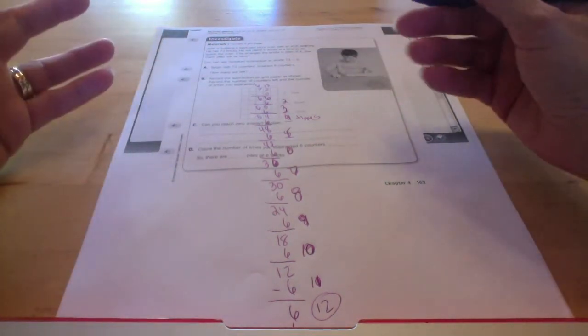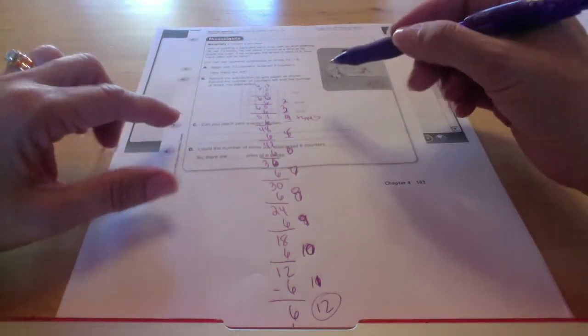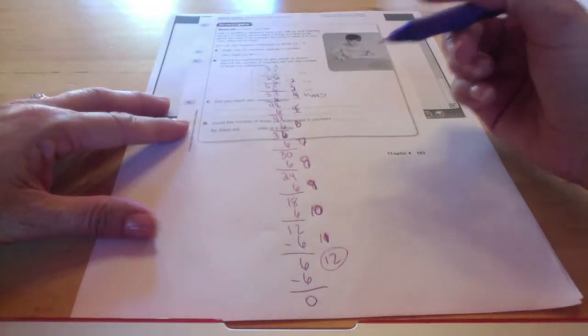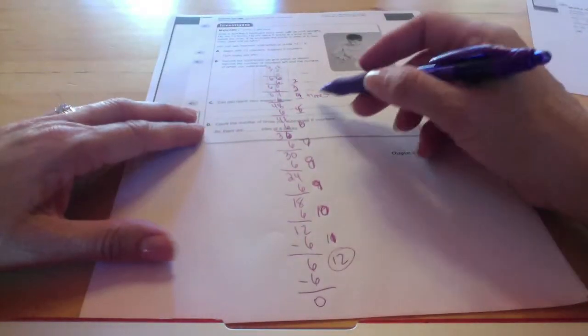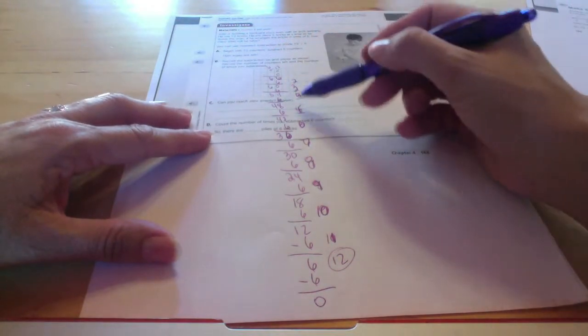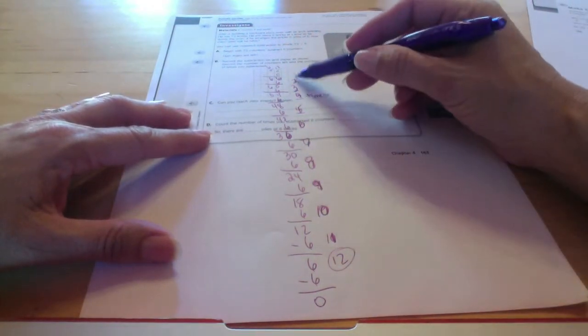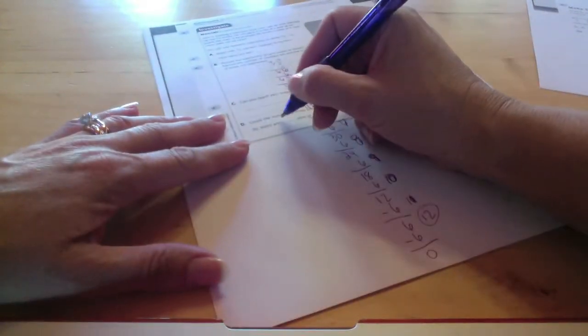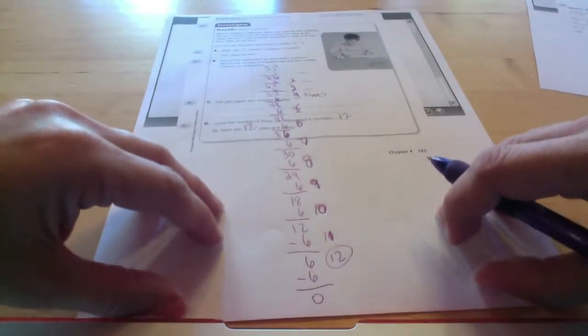72, and to do division a different way. Can you reach zero evenly? Did we reach zero evenly? Yes, we did. Count the number of times we subtracted six. I counted them. I counted them wrong first, because I counted one twice. But it was 12. So then there are 12 piles of six bricks.